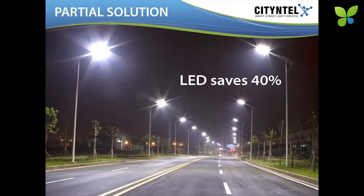We can change street light installations into LEDs and save 40% of energy. However, this is only a part of the solution, because we don't need full lights when there is nobody on the street. So, adding smart control which can really understand the conditions and when we need light, we can achieve savings up to 80, 85, even sometimes 90%, compared to existing solutions.